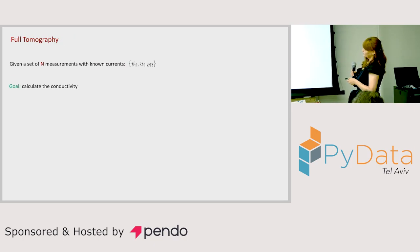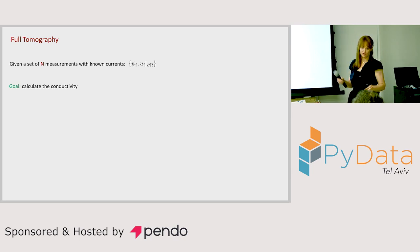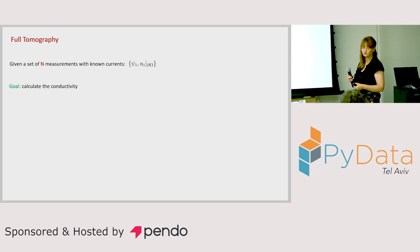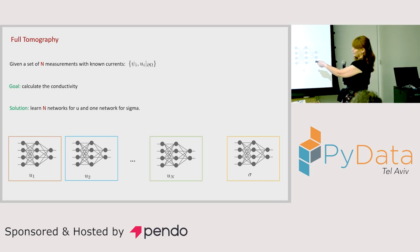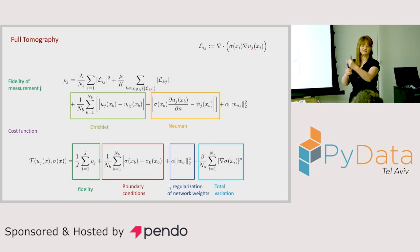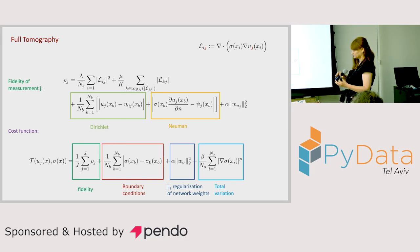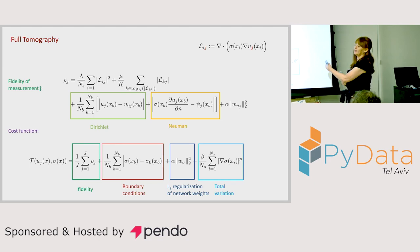In the full tomography setting, U is known only on the boundary, not inside the domain — because when measuring people, we have measurements only on the surface, not inside the body. This is more challenging: we must reconstruct sigma and U everywhere inside the domain. I trained eight networks for U and one network for sigma, using alternating minimization — finding U given sigma, then sigma given U, alternately. This was more expensive since nine networks are trained simultaneously, requiring some GPU use.